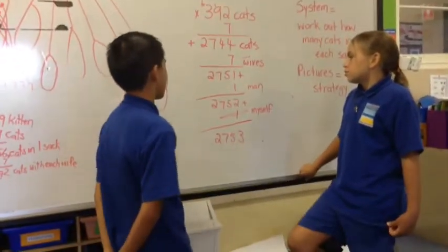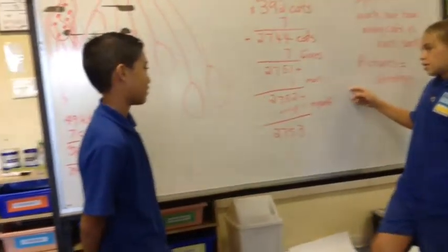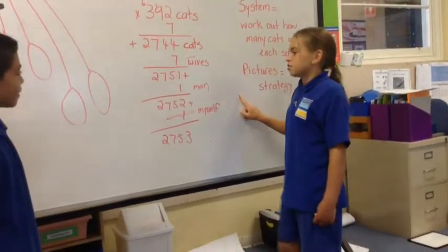But then we had the first seven wives, which was 2751. And then we forgot to add the man and ourselves, so we ended up with 2753.